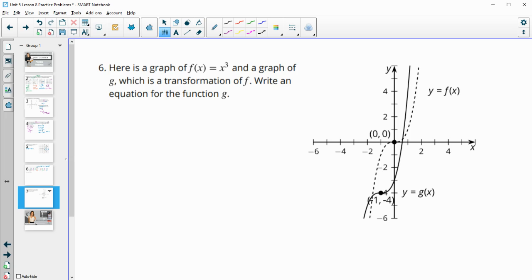Finally, number six. Here's the graph of f of x equals x cubed. So this dotted line here is x cubed and then a graph of g which is a transformation of f. Write the equation of g. Let me just get f of x drawn on here so that we can kind of move this around. So this one definitely we're moving down and over. So it's just translations.